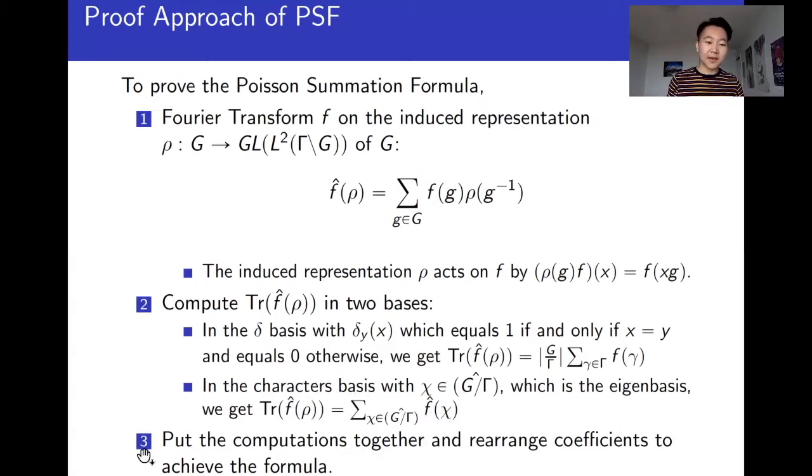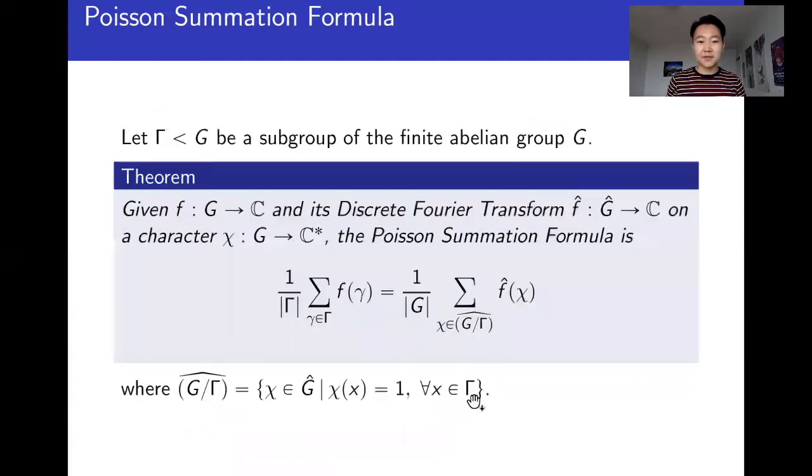And now, finally, we just put these two computations together, we arrange the coefficients, pull the G on here over to this side, and we end up with this formula. This formula is very, very useful. We saw proofs using this to prove an inversion formula for the Jacobi theta function, as well as a functional equation for the Riemann theta function. Both can be proved using this Poisson summation formula.